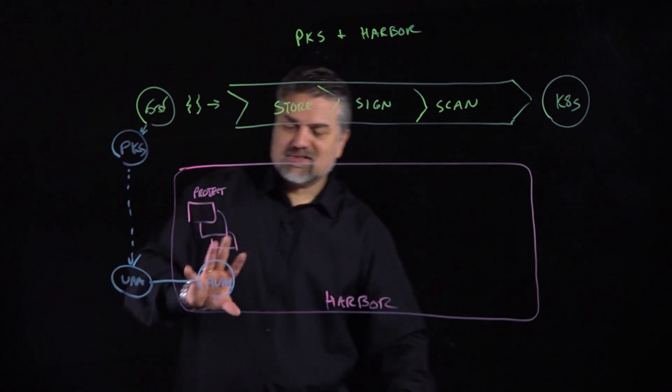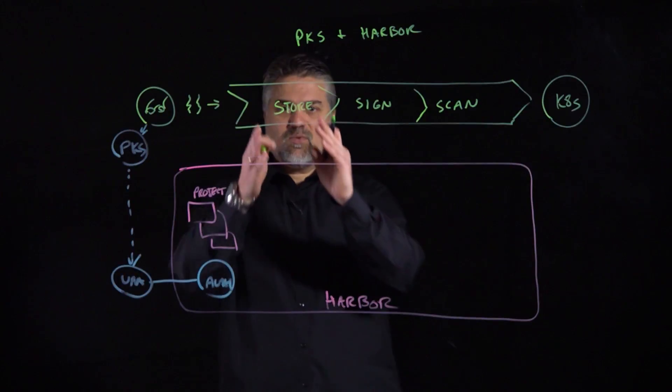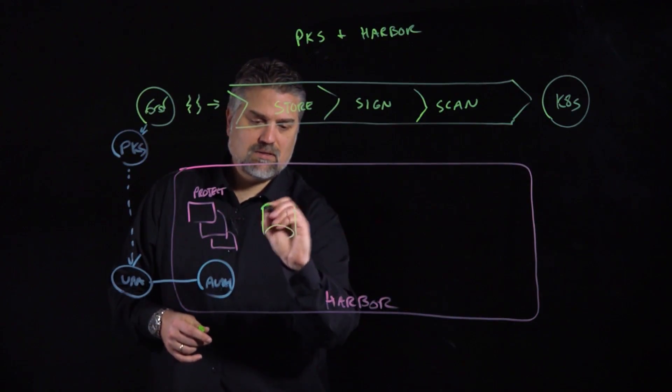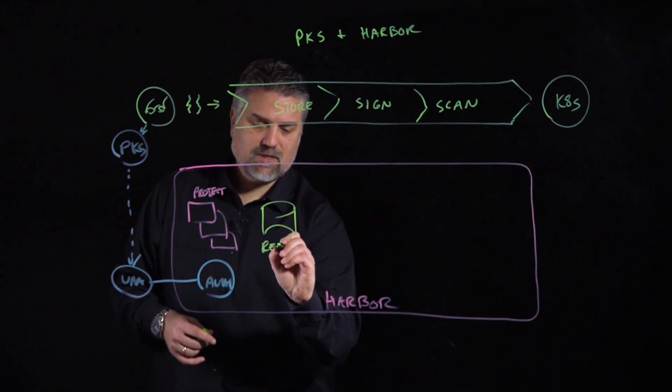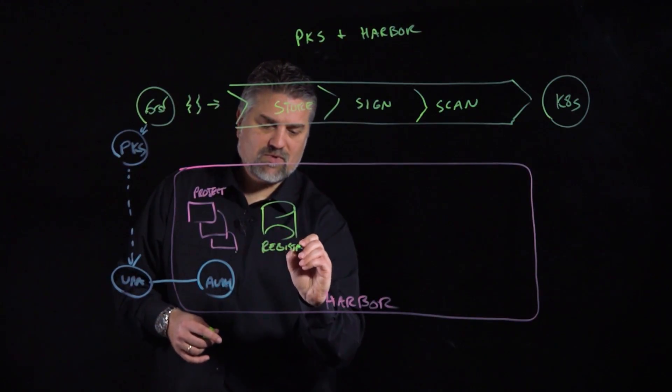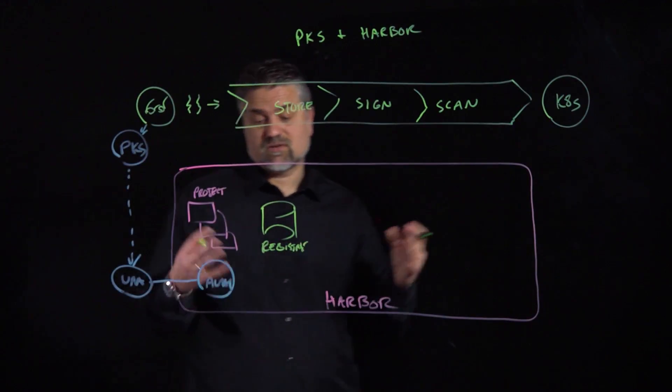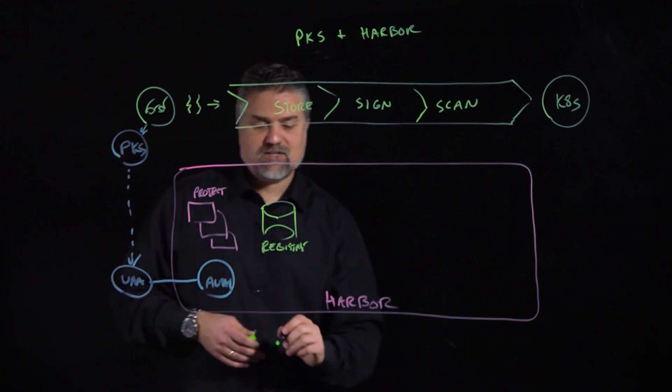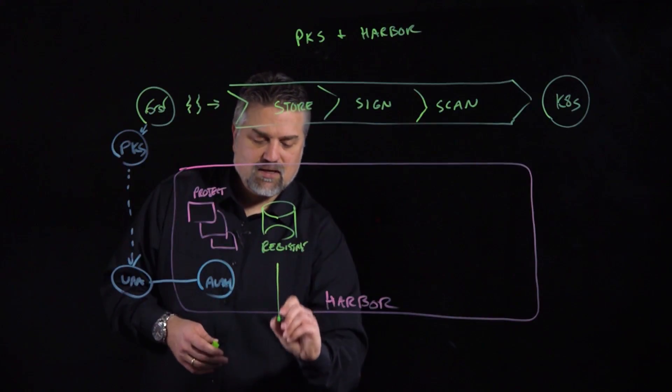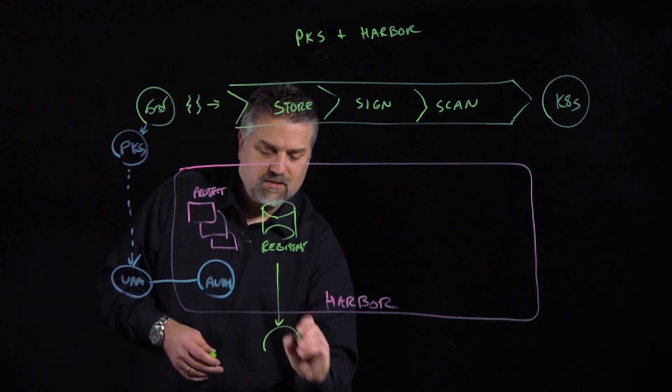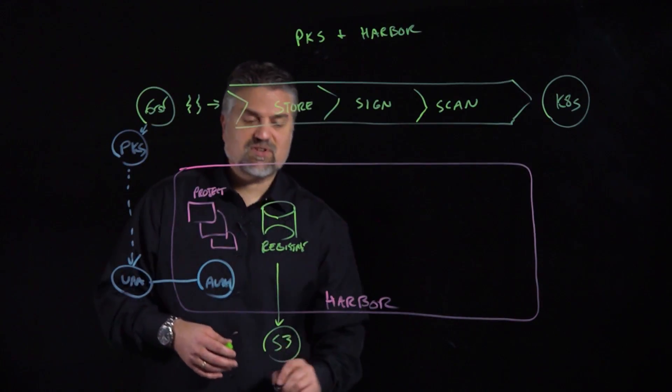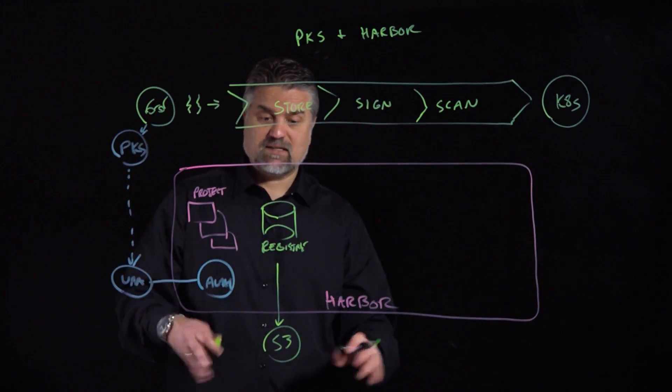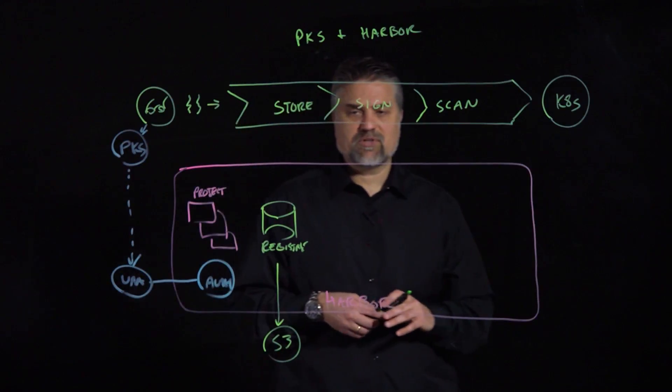Now, in addition to divvying things up in projects, Harbor has to store images, right? So, Harbor provides registry. It's a way that we can store Docker images or other types of artifacts, but primarily Docker images in this case. So, our registry can actually do a couple of cool things. It can actually link externally to object storage like S3, so we can store our images in a highly available and highly scalable backend, or we can store our registry local in our internal HarborDB.